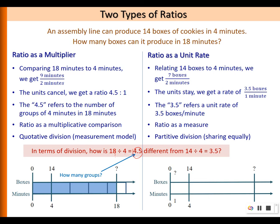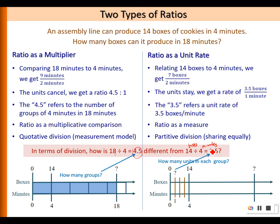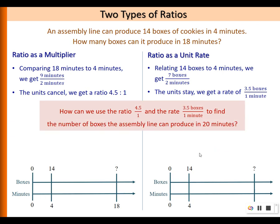Whereas 14 divided by 4 is partitive division. Here it's 14 boxes divided by 4 minutes, and the units are different. We are partitioning 14 boxes into 4 equal parts and asking how many boxes are in each part or in each minute. The answer is 3.5. This is the sharing-equally model of division, or the 'how many units in one group' type of division.